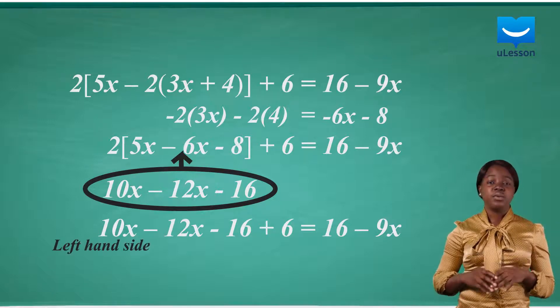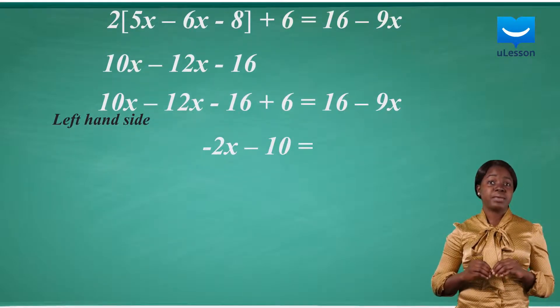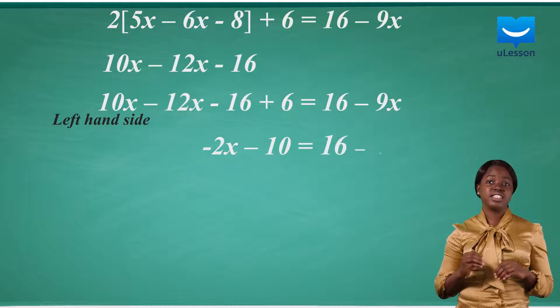Simplifying the left hand side, we get minus 2x minus 10 equals 16 minus 9x.